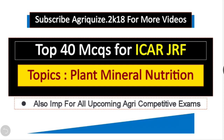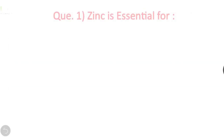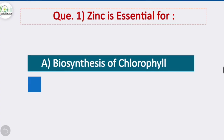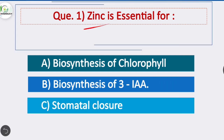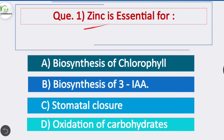Hello friends, welcome to our YouTube channel. Today I am covering the top 14 questions for ICMR and other competitive exams on the topic of plant mineral nutrition. Question 1: Zinc is essential for — option B is correct — biosynthesis of IAA, that is indoleacetic acid, which is an auxin hormone. Zinc is essential for the production of that hormone.